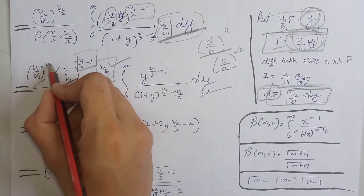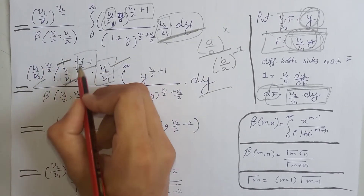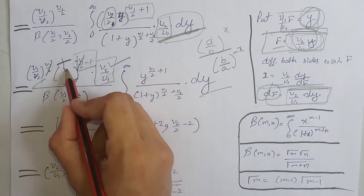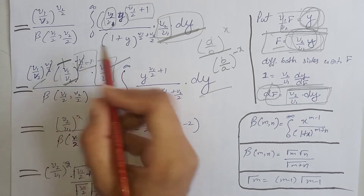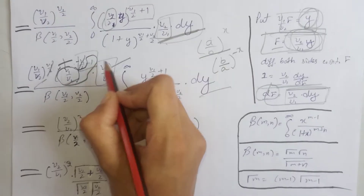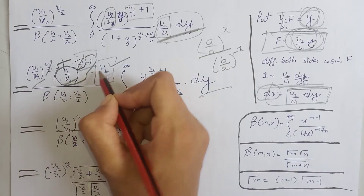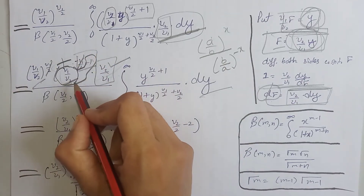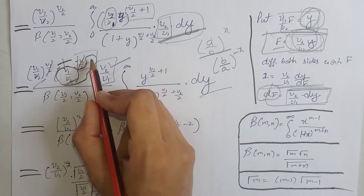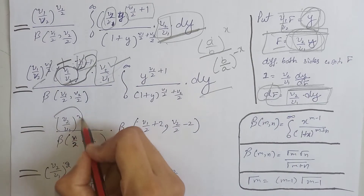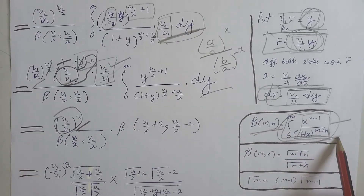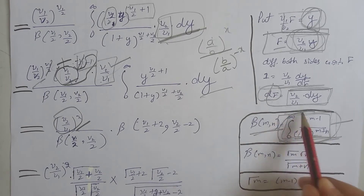Since the bases are the same, we add the powers: ν₁/2 plus (minus ν₁/2 minus 1), which simplifies, leaving ν₁/2 raised to minus 1. We can also write the ν₂/ν₁ term raised to power plus 1. The bases then become the same and the powers combine, giving us the simplified expression.